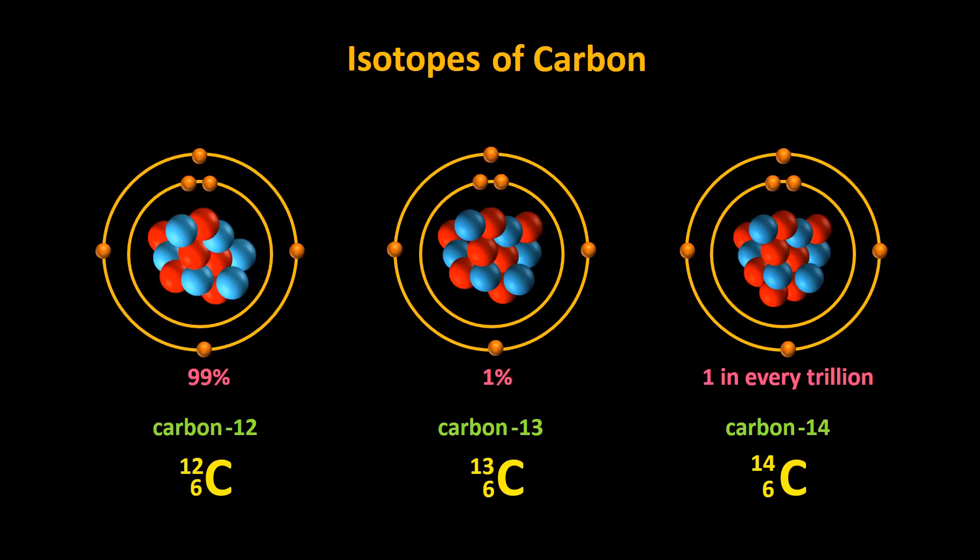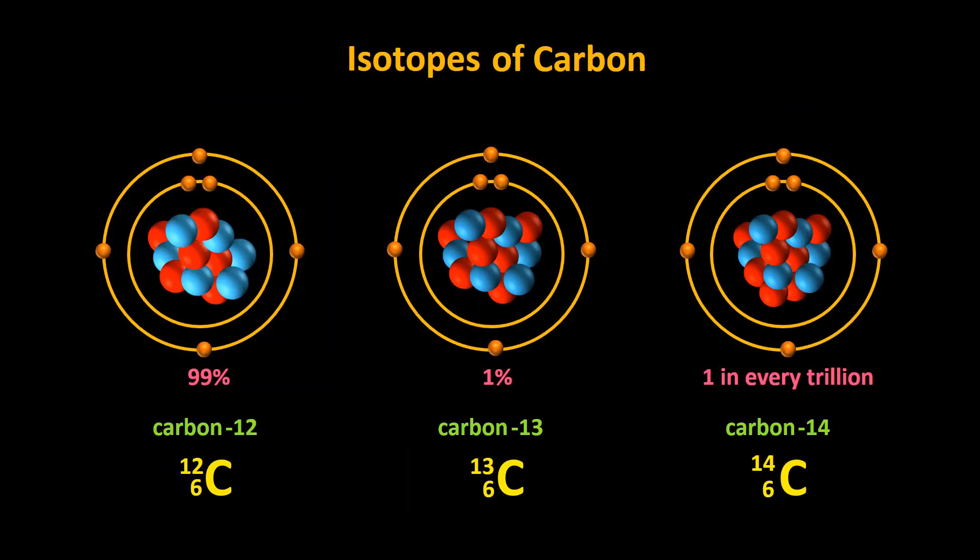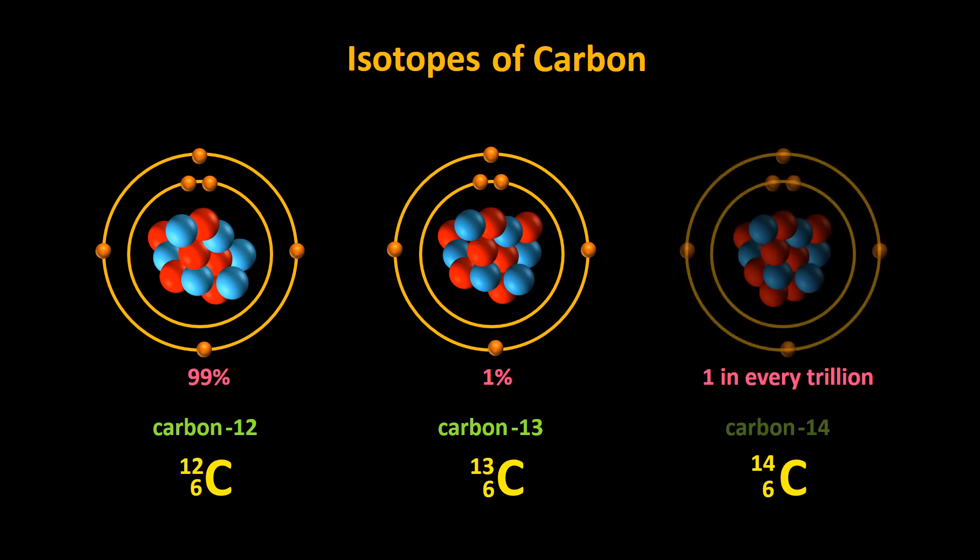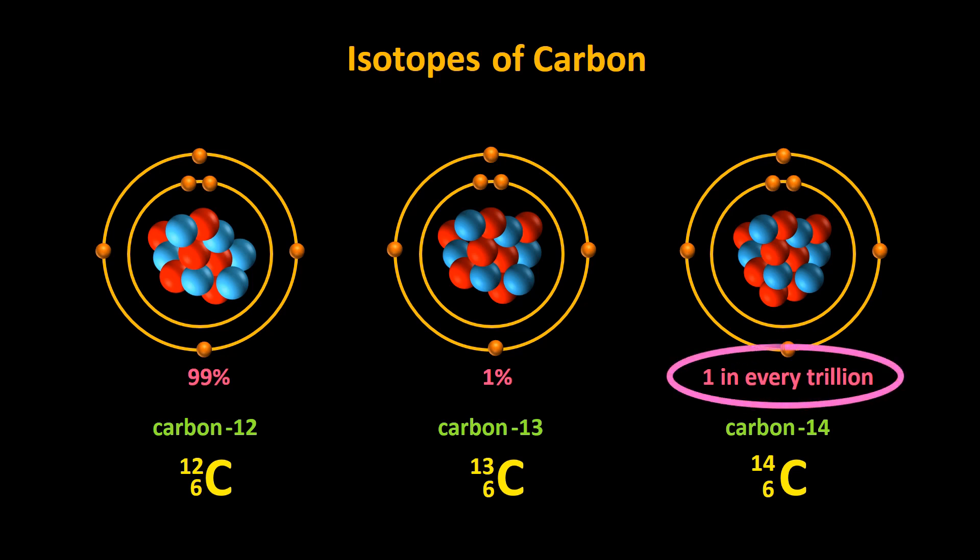Let's look at an example. We saw in episode 1 that there are three naturally occurring isotopes of carbon. Carbon-14, which accounts for only about one in every trillion carbon atoms on Earth, is a beta minus emitter.